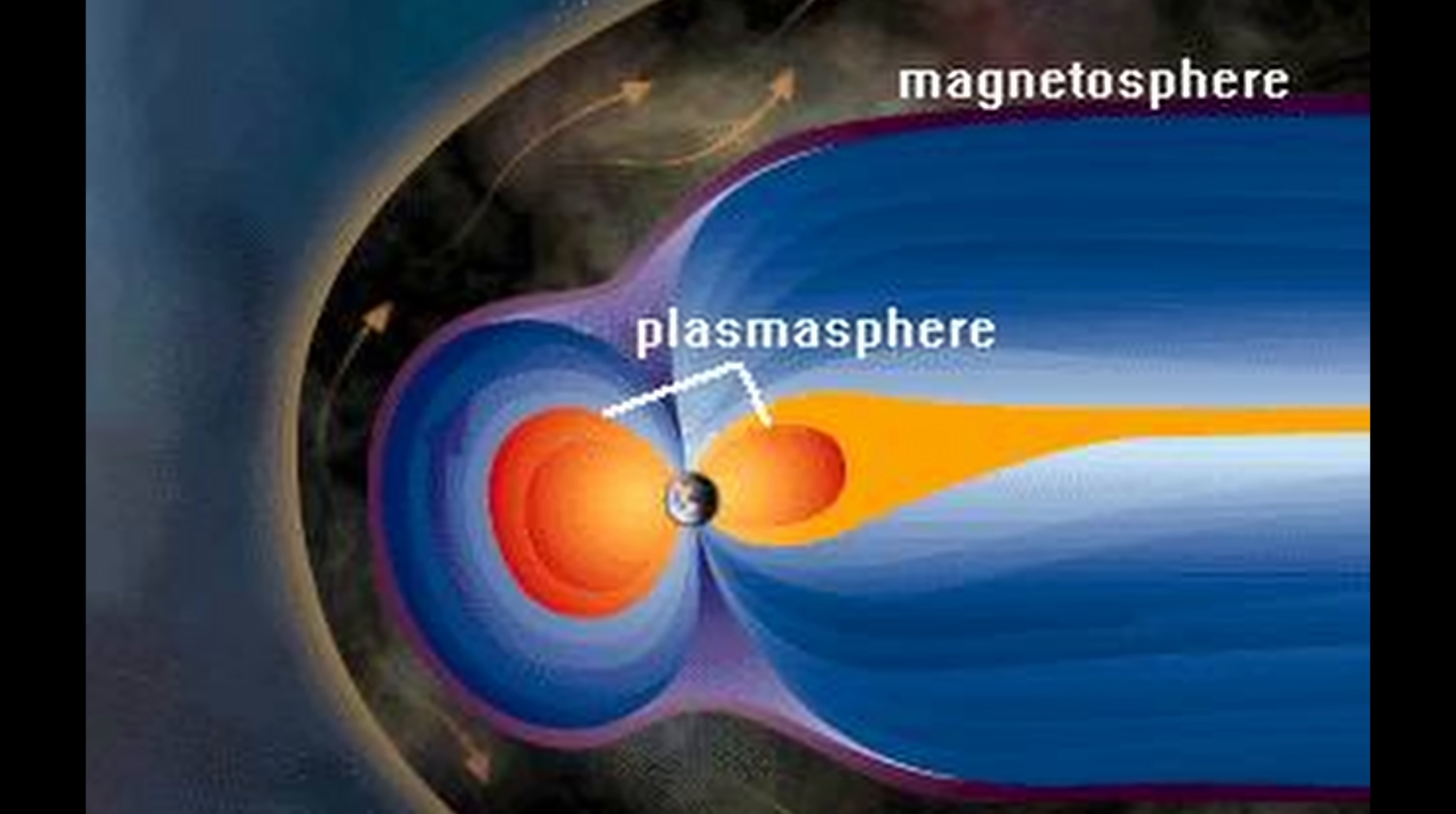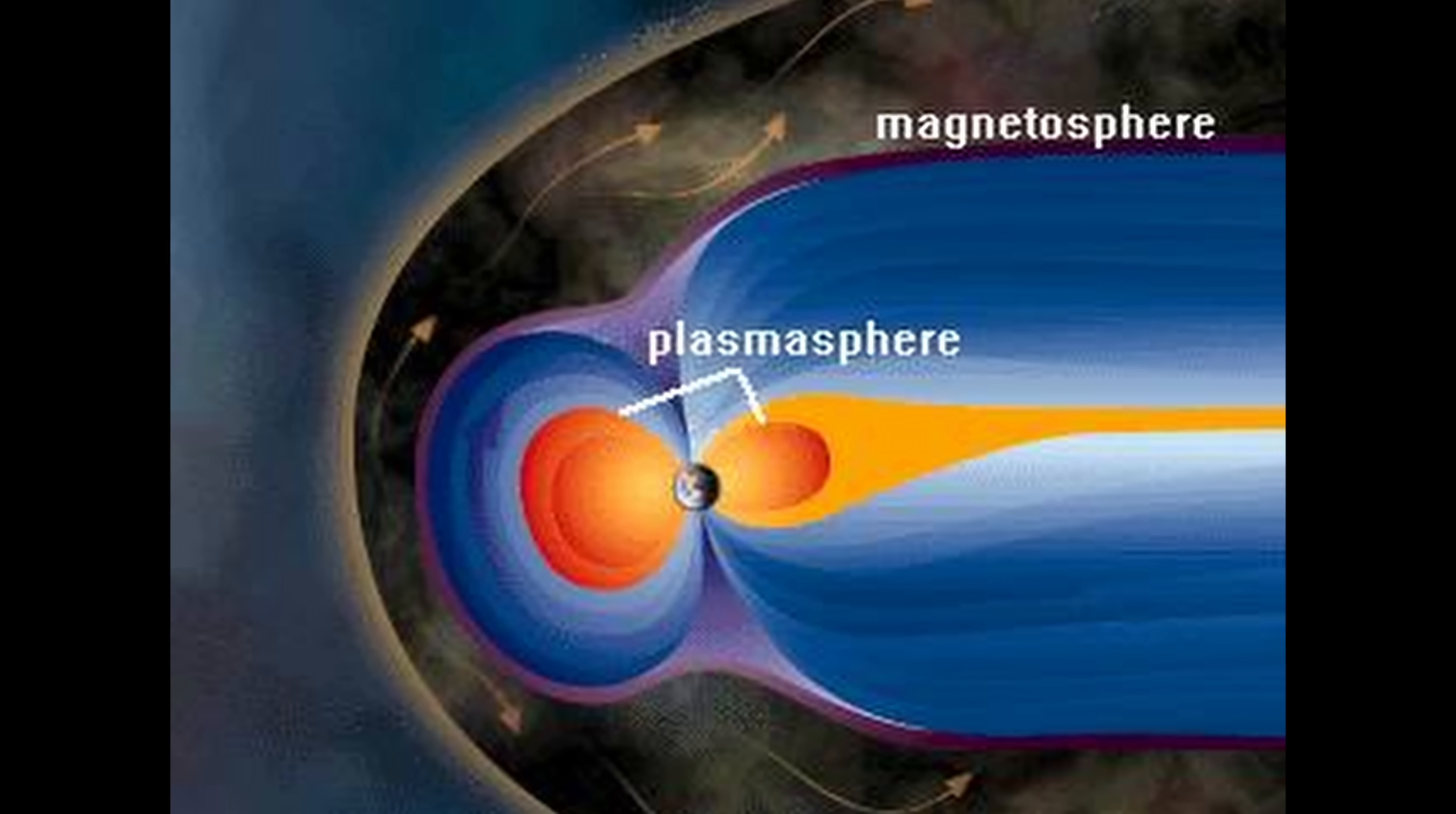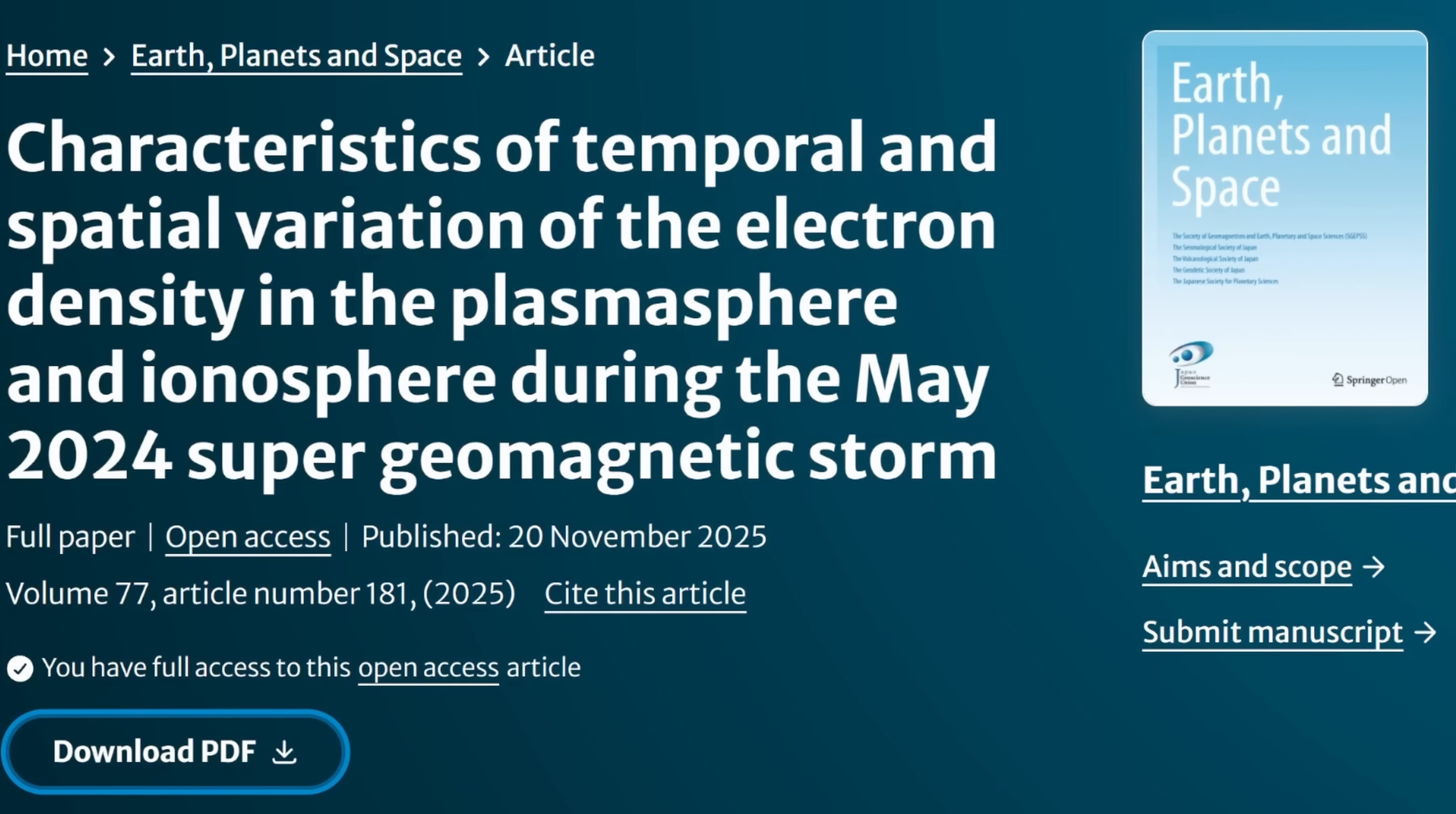In this case, plasmasphere is a protective layer of cold charged particles encircling the planet that usually works with the magnetic field to protect us from harmful particles. During this storm, this particular satellite was positioned in just the right way to measure Earth's plasmasphere during this event, and it made quite a shocking discovery, the discovery that was recently reported in this study.